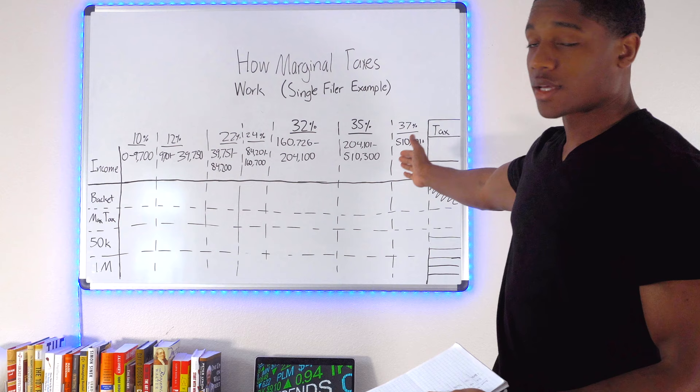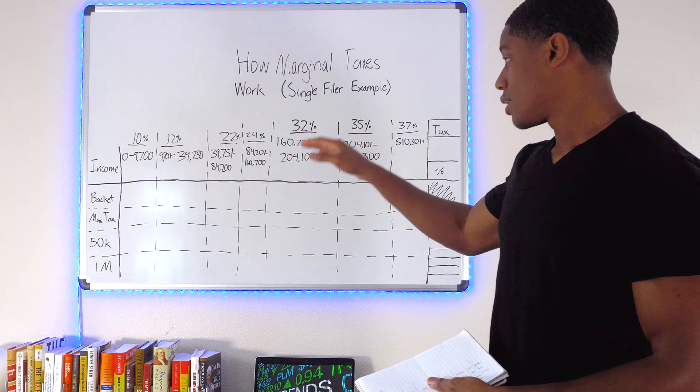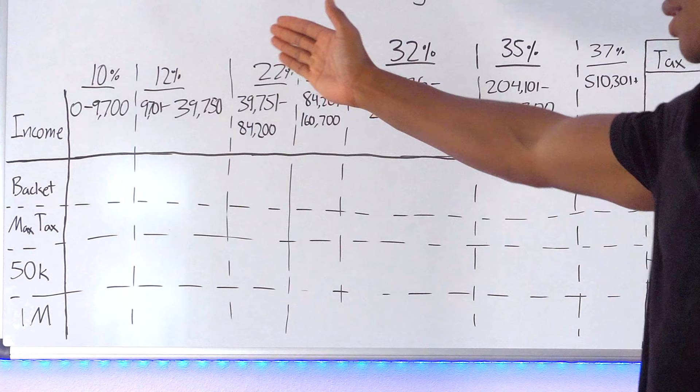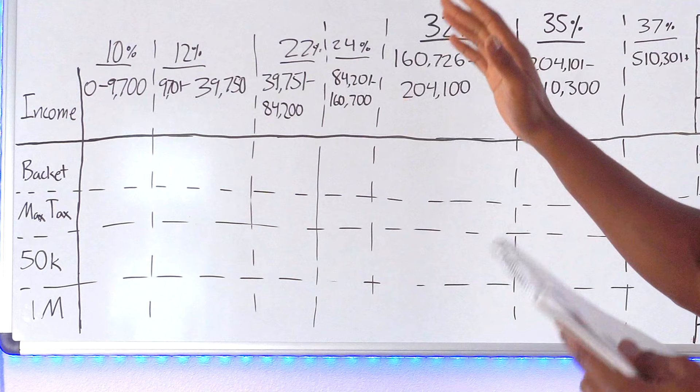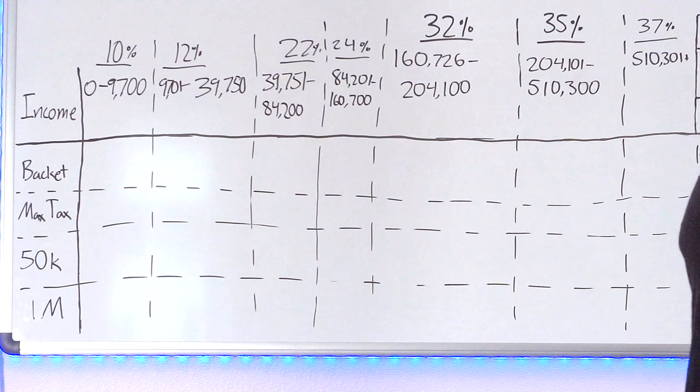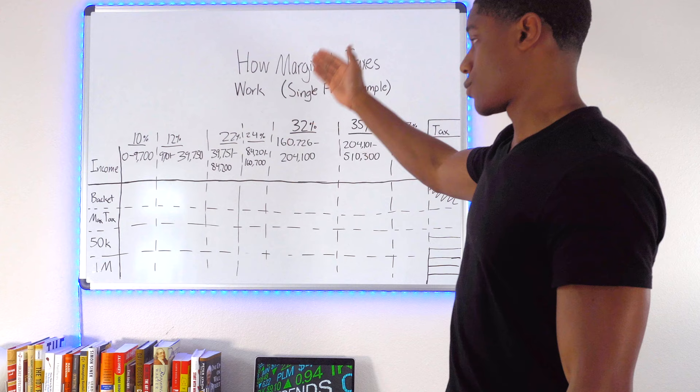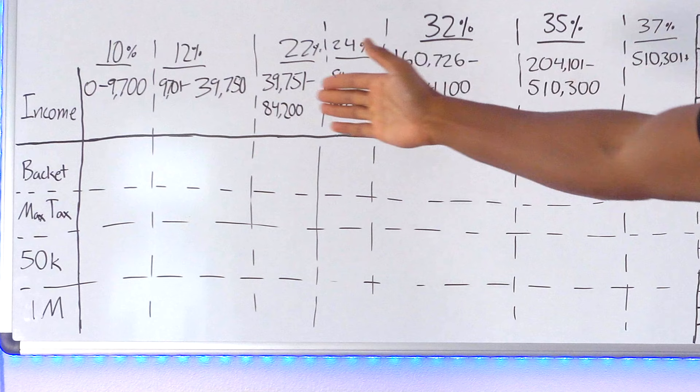Let's talk about the income bracket. So basically, the brackets, like we said before, with great power comes great responsibility. With great money comes Uncle Sam's hand in your pocket. So Uncle Sam is going to take 10% of the first $9,700 that you make. So the next bracket, 9,701 is going to take 12 cents of that 9,701st dollar. So all the way up to 39,750 and so on and so forth.